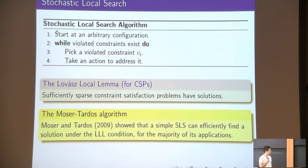In the last decade, there has been a breakthrough in the analysis of this kind of algorithm, due to Moser and Tardos, who showed that basically a simple stochastic local search algorithm of this form can efficiently find solutions that are promised by a statement in probabilistic combinatorics called the Lovász Local Lemma. This is a very powerful tool in combinatorics that basically says, when applied to constraint satisfaction problems, that if your input problem is sparse enough in a certain sense, then the problem has a solution.